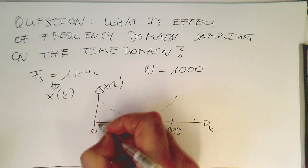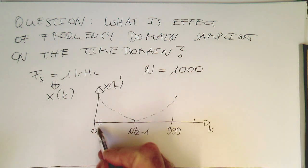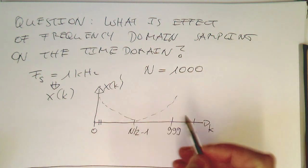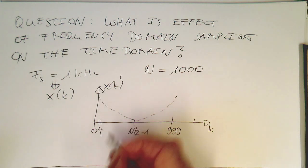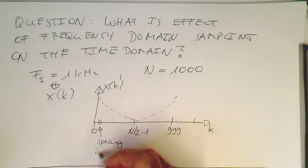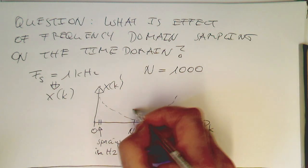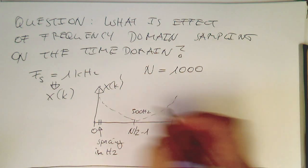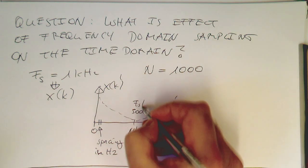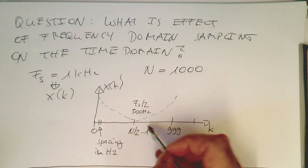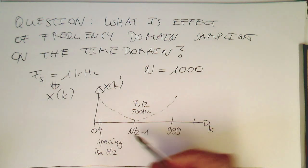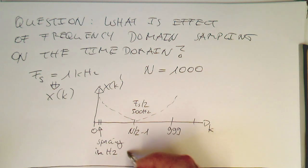So the question is now, what is the spacing between two of these k's? So what's the spacing in hertz? And because I've been quite lazy here, obviously this must be 500 hertz, because that's FS over 2, that's our Nyquist frequency here. So therefore the spacing in hertz must be 1 hertz.